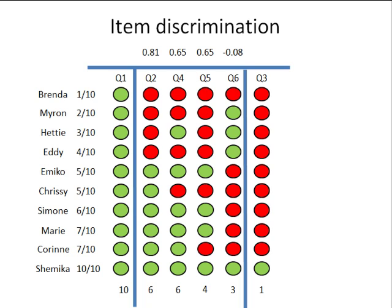Question 3 was only answered correctly by the person who scored 100%. You might expect this discrimination to be as high as question 2, but the problem is that the question was perhaps too difficult for the cohort as a whole. So it's not really great at discriminating how good people were on the test — it just comes down to whether they got everything right or not. The discrimination measure for this question is therefore somewhere similar to questions 4 and 5.